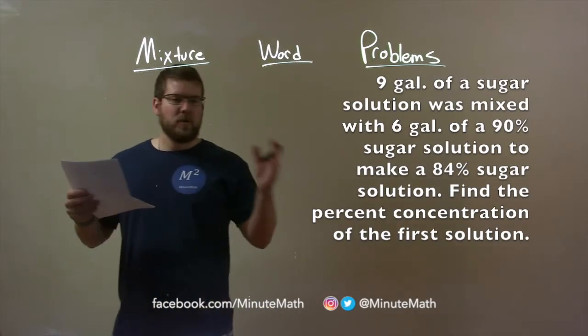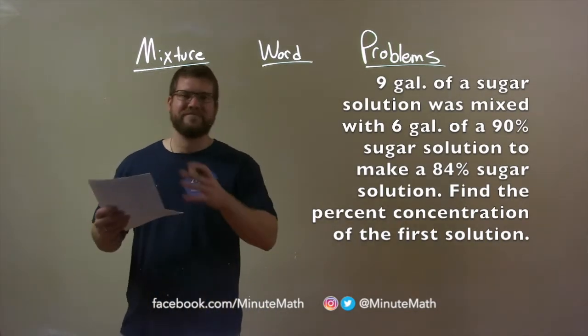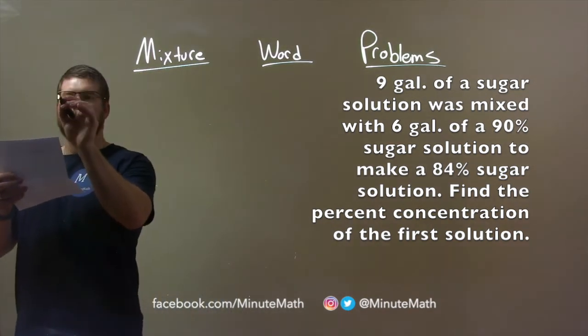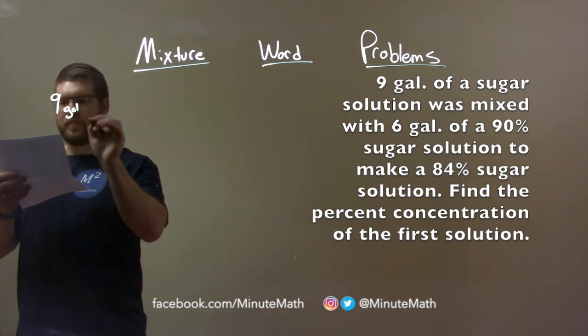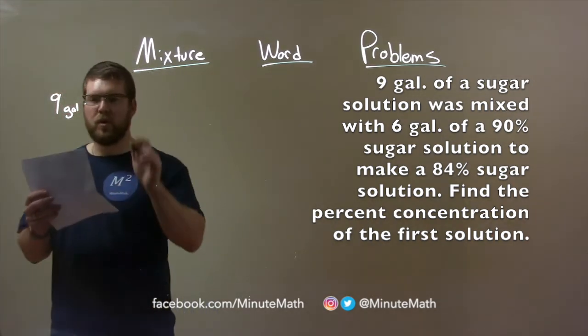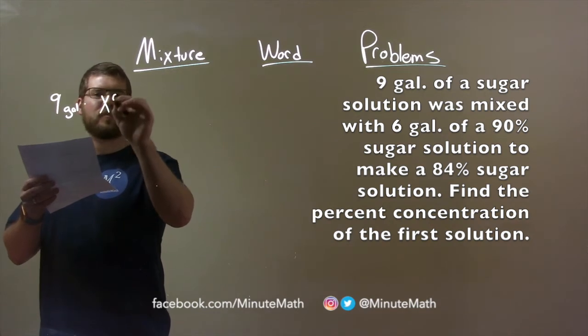What I want to do is make that into an equation. They tell us that the first solution of 9 gallons contains some sugar solution. We don't know that, so let's label that x, x percent of that.